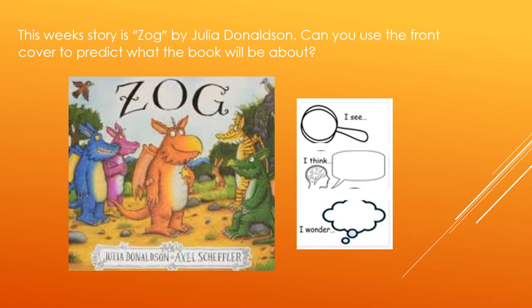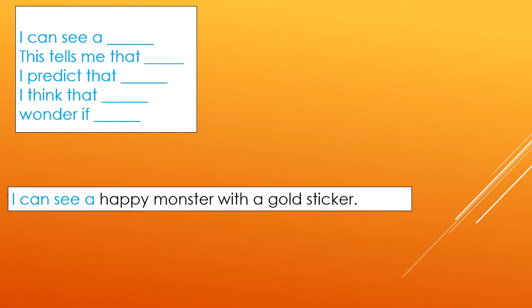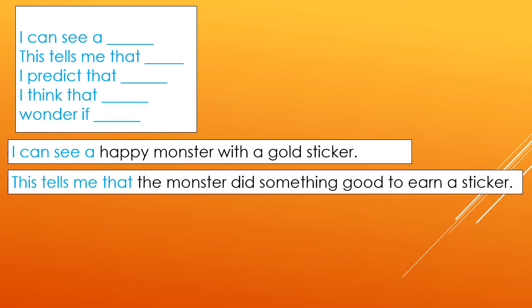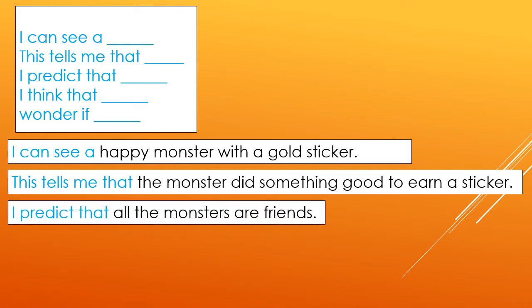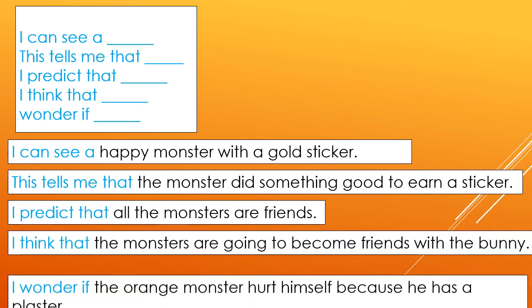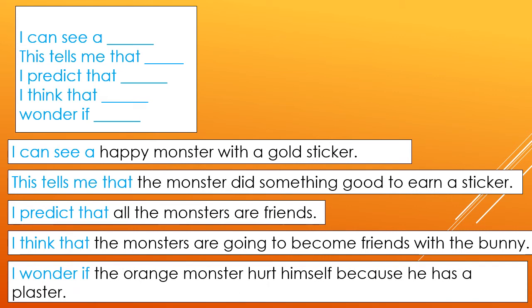Now we are going to use these sentence stems to do some more predictions. Let me do some for you and then you can do some on your paper. I can see a happy monster with a gold sticker. This tells me that the monster did something good to earn a sticker. I predict that all the monsters are friends. I think that the monsters are going to become friends with the bunny. And I wonder if the orange monster hurt himself because he has a plaster.